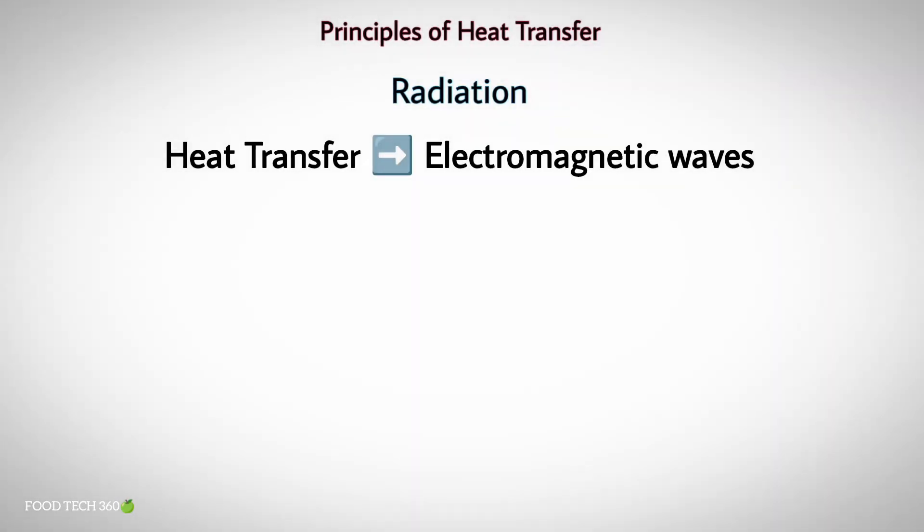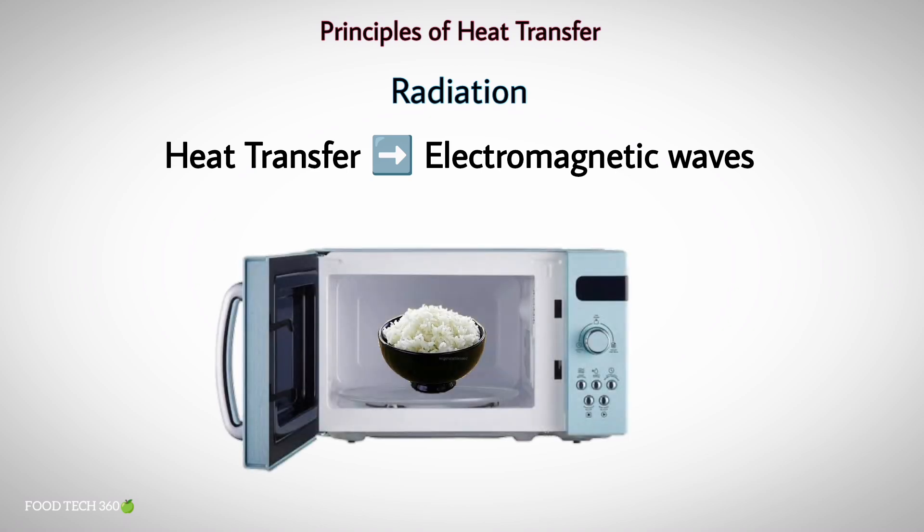Radiation is the transfer of heat energy by electromagnetic waves, which transfer heat from one body to another in the same way as electromagnetic light waves transfer light energy. An example of radiation heat transfer is the heating of food items in a microwave oven.